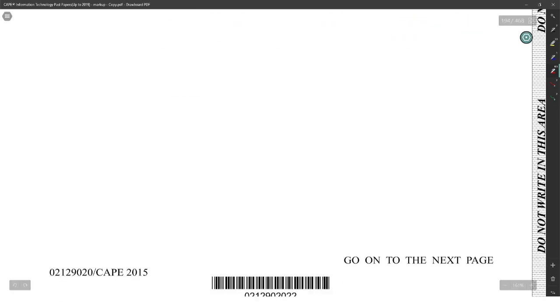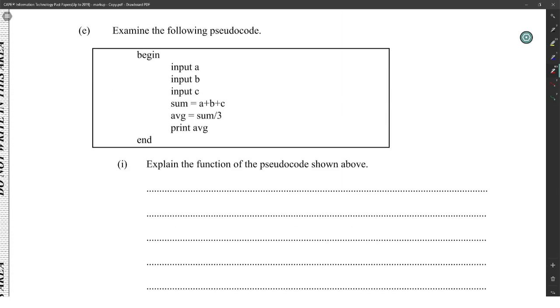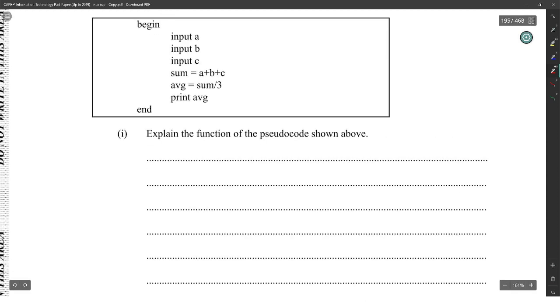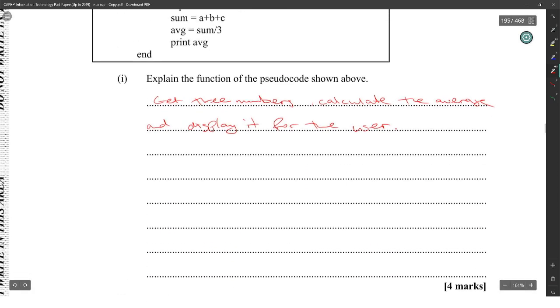Examine the following pseudocode: begin, input a, input b, input c, average equals sum divided by 3, print average, end. The function is to get three numbers, calculate the average, and display it for the user.